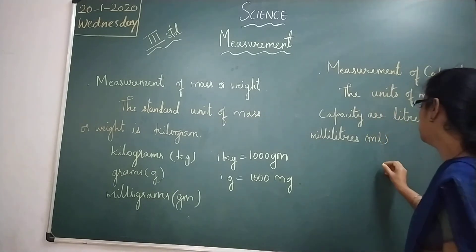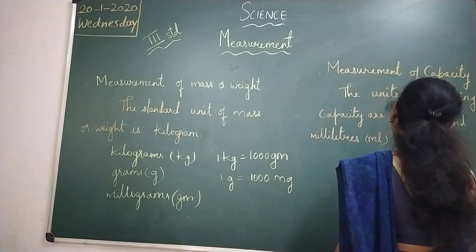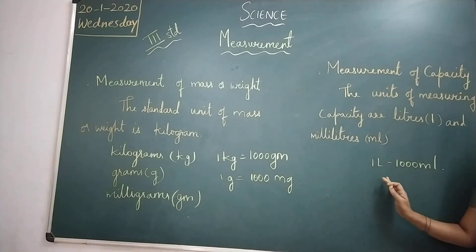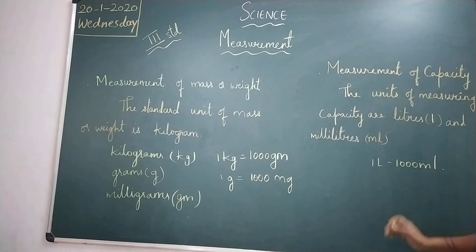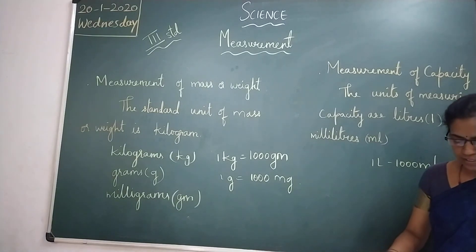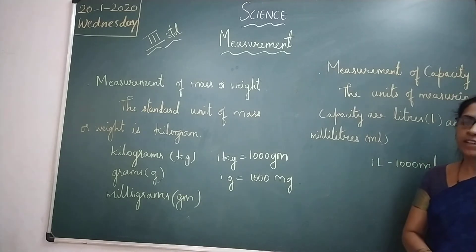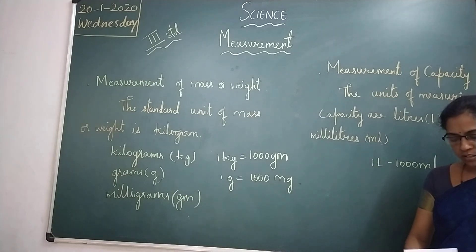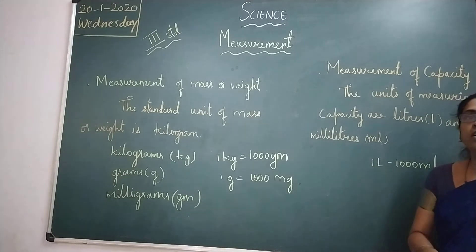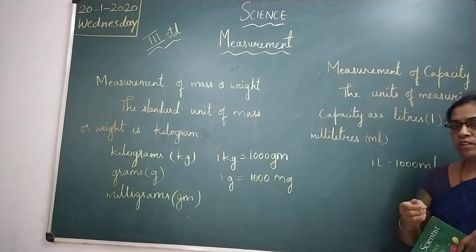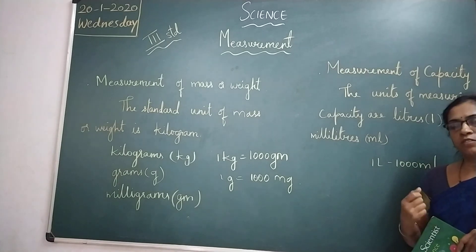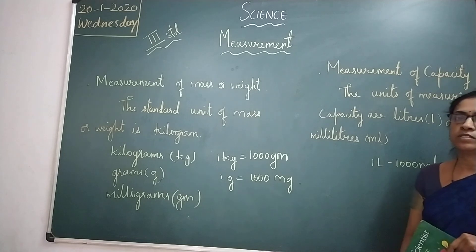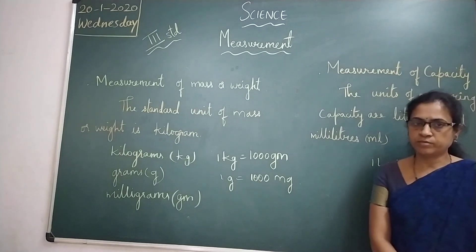Children, larger capacity is measured in liters and smaller capacity is measured in milliliters. Let me end the class here. In the next class, we will learn about measurement of time and measurement of temperature. I hope you have understood. As a homework activity, observe the markings on syrup bottles at home and also look at any measuring cans you have. Thank you.